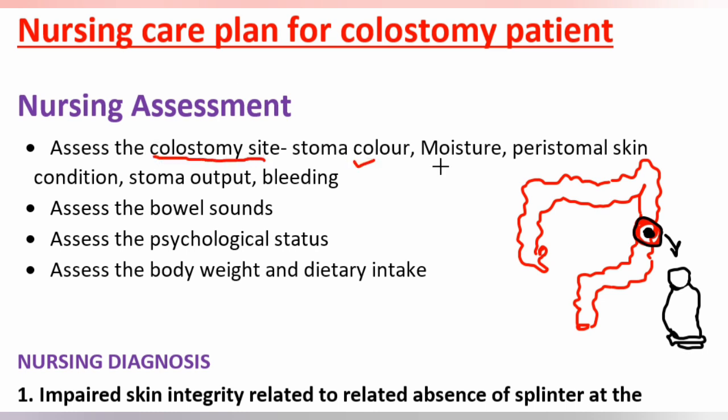Assess the colostomy site: stoma color, moisture, periostomal skin condition, stoma output, and bleeding of the stoma. Assess the bowel sounds. Assess the psychological status. Assess the body weight and dietary intake.